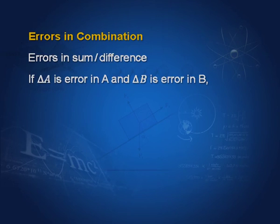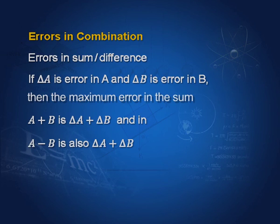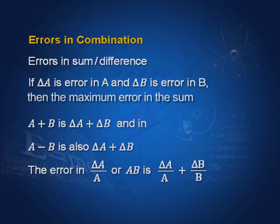Many times you have to think of errors in combination. Suppose you measure two quantities A and B, where ΔA is the error in A and ΔB is the error in B. Then the maximum error in the sum A + B is ΔA + ΔB. And even if you take the difference A − B, the error is still ΔA + ΔB — that is why it is called the maximum error. The error in A/B or A×B is ΔA/A + ΔB/B, whether you take division or multiplication.